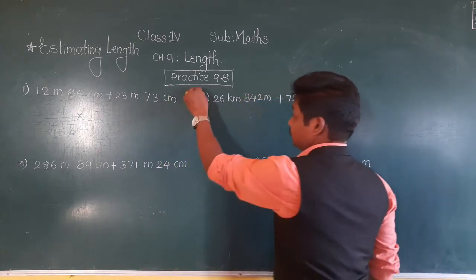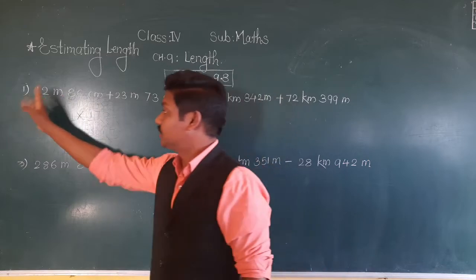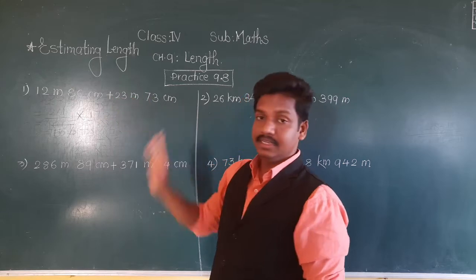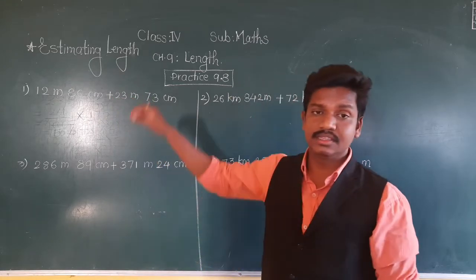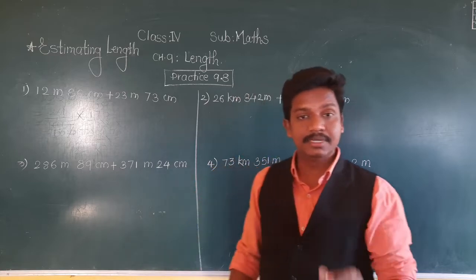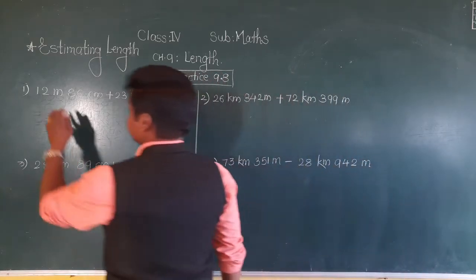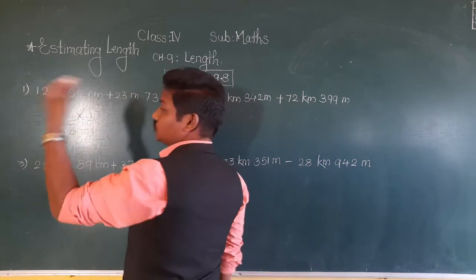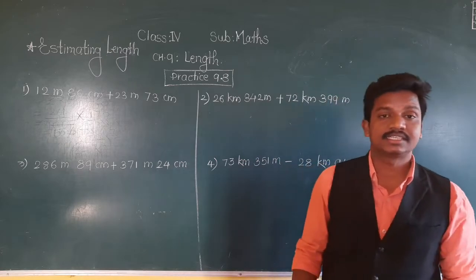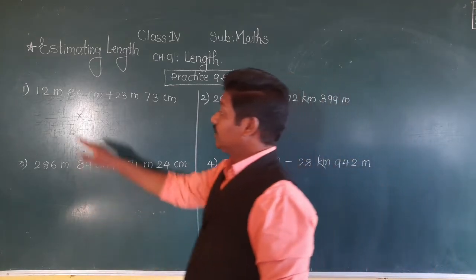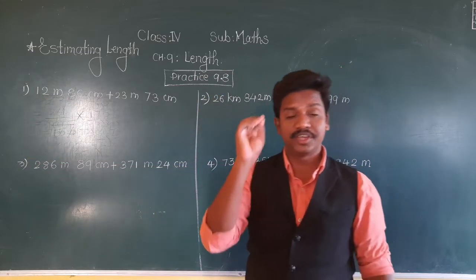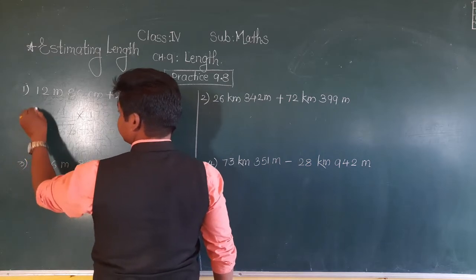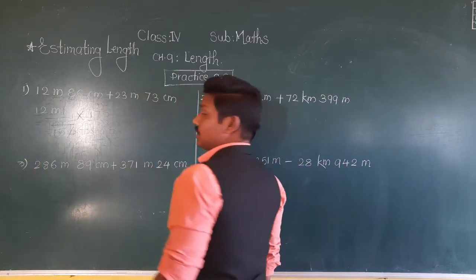First example: 12 meter 86 centimeter plus 23 meter 73 centimeter. Here length is given in meter and centimeter, so the greater unit is meter and we estimate to the nearest meter. How many meters are there? 12 meters — write 12 meters as it is. In the centimeter column, the first digit is 8.